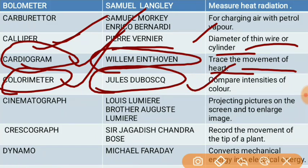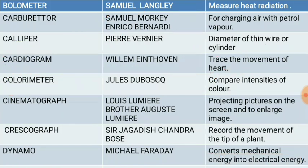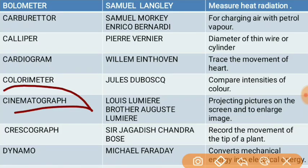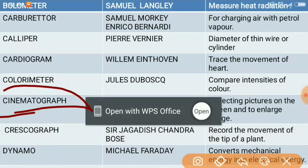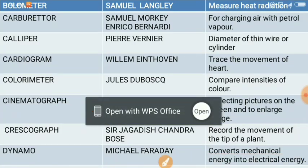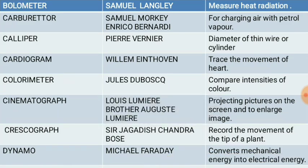Next is the colorimeter. The colorimeter was invented by Jules Donbosk. It is used to compare the intensities of colors.